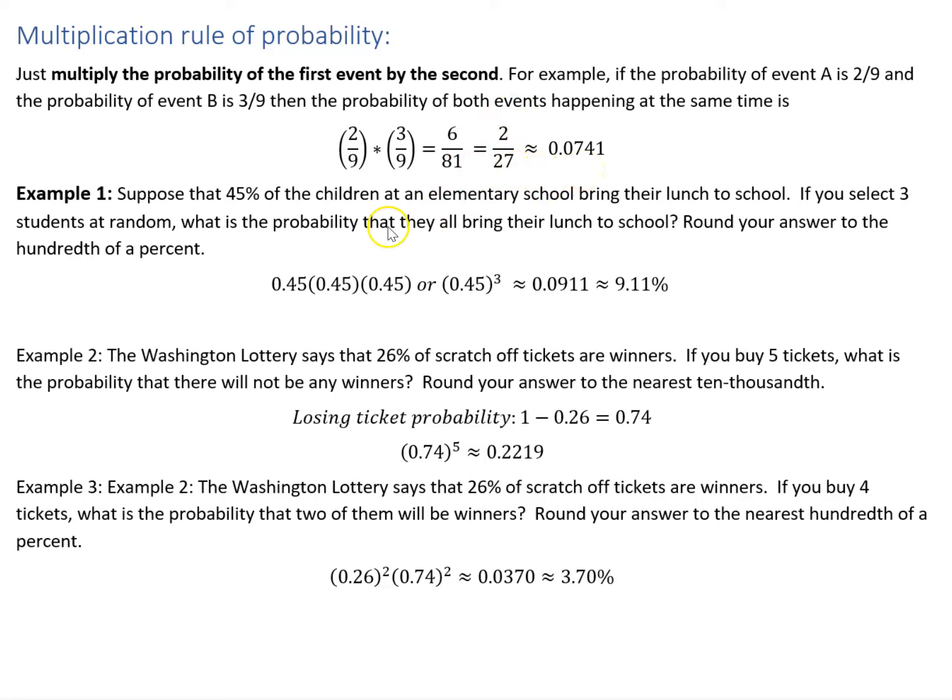So an example: suppose that 45% of the children at an elementary school bring their lunch to school. If you select three students at random, what's the probability they all bring their lunch to school? Round your answer to the hundredth of a percent.